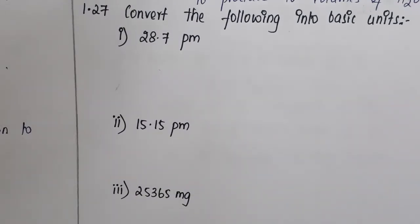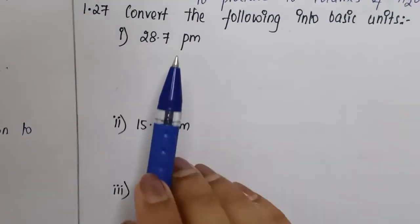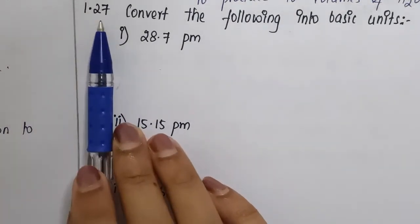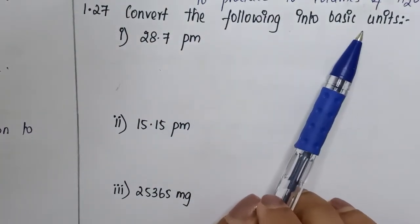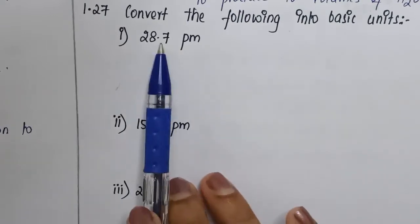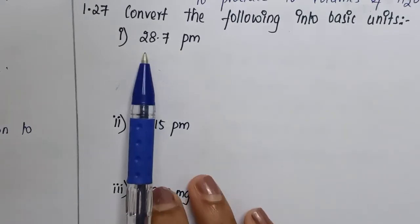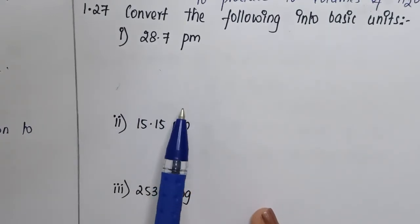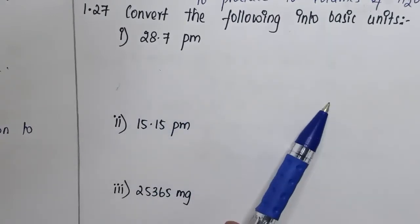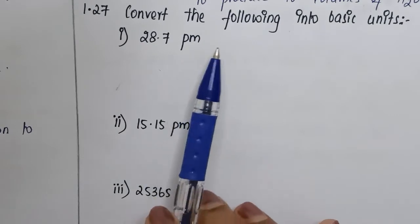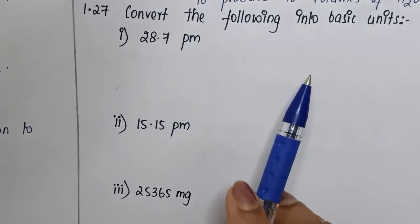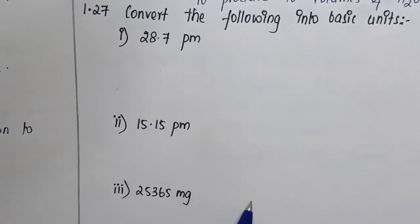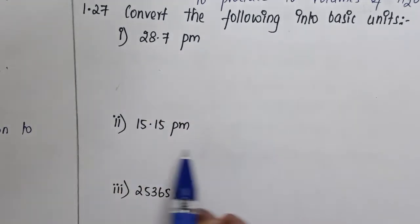Students, question number 1.27: convert the following into basic units. We have three questions here; we're going to convert each into its basic units. For picometers we will convert to meters, and when we have milligrams we're going to convert to kilograms. Let's see how to do that conversion.